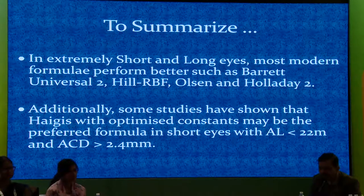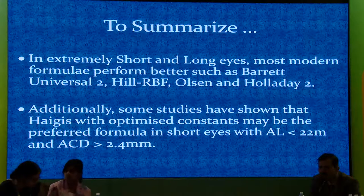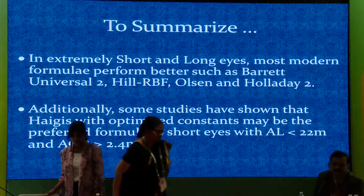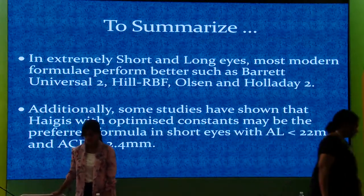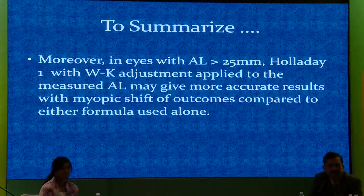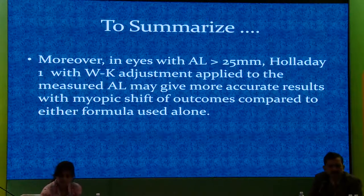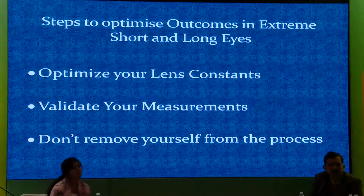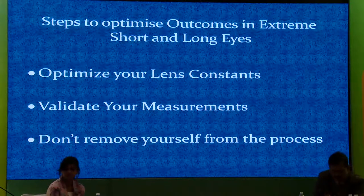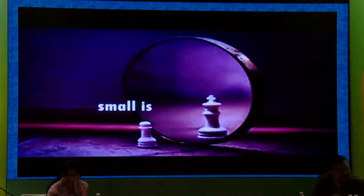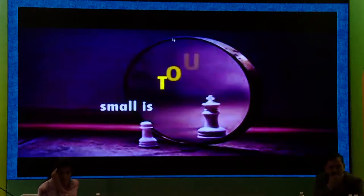In extremely short and long eyes, modern formulas such as Barrett Universal II, Hill RBF, Olsen, and Holladay 2 give better results. Some studies have shown that Haigis is good with an optimized A-constant for axial length less than 22 and an ACD of 2.5. To summarize: for axial length more than 25, Holladay 2 works well with the Wang-Koch adjustment applied. To optimize your IOL constants, you need your SIA and must not remove yourself from the process — counseling is very, very important.